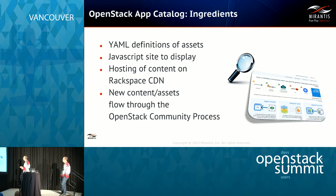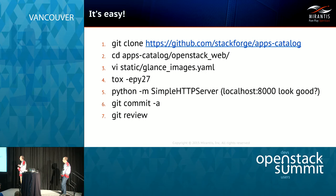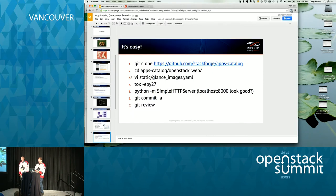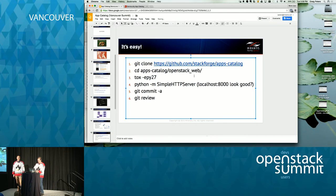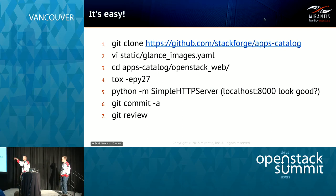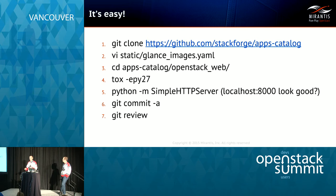Behind the scenes, it is just a YAML file. Here's the process — it's a few steps but pretty straightforward. You clone the repo, edit your item, add your content — the steps are on the wiki. Then you run tox and run Python's simple server just to see if it renders right and looks nice, make sure you're happy with how your description reads. Then do a git commit and a git review. After it gets reviewed, it'll get merged or you'll get some comments. As you can see for the Fedora Glance image, this is all it takes — just the YAML. It's really straightforward and easy to do.